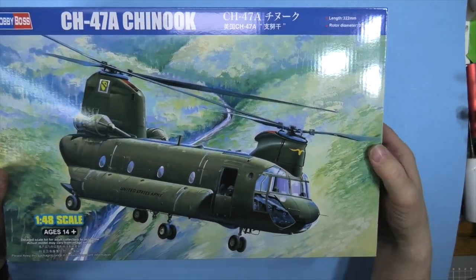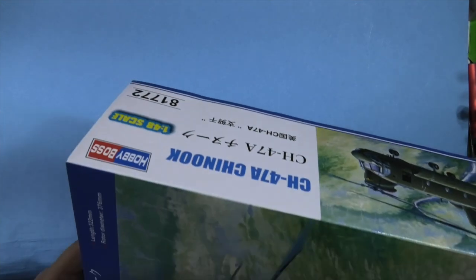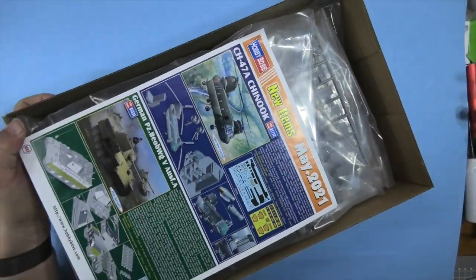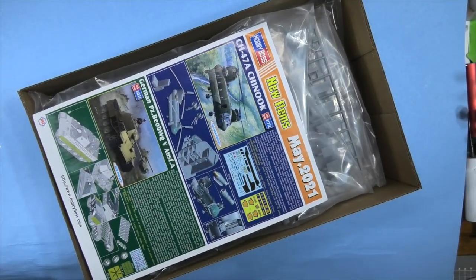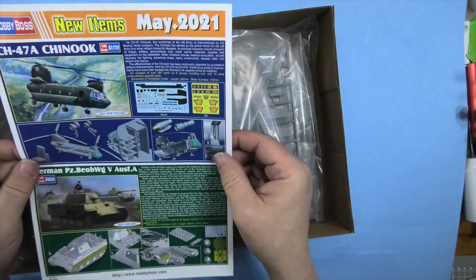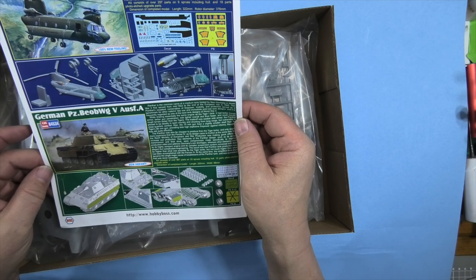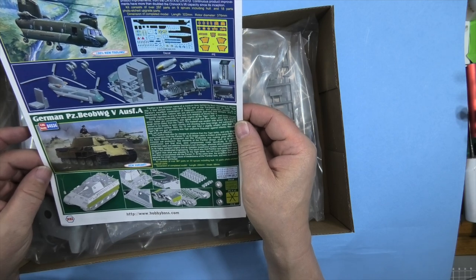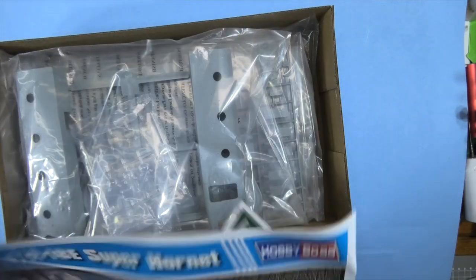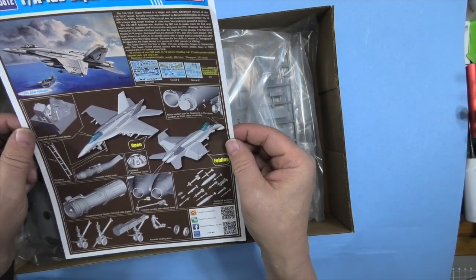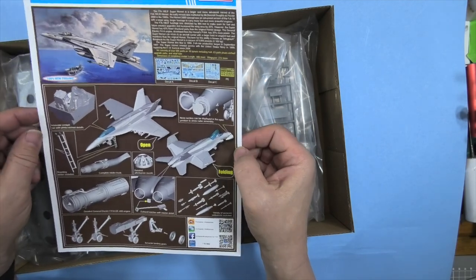Here is the beautiful box art. Here is me trying to get into this box. We've got the typical Hobby Boss advertisement - the new Chinook, German Panzer something, and an F/A-18E Super Hornet which I will be doing a review of shortly.